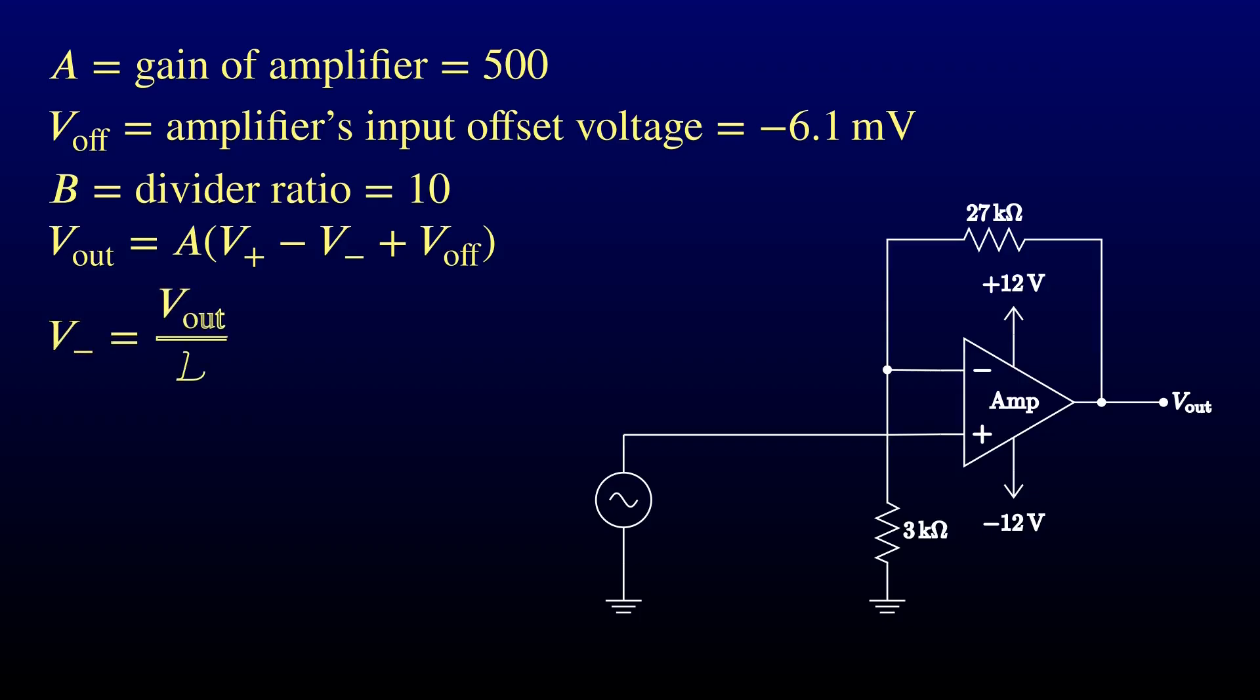We can model our amplifier's output as a simple linear function of its two inputs. And, of course, we have the formula for the voltage divider. Let's substitute it into the formula for V-out on Algebra Autopilot.